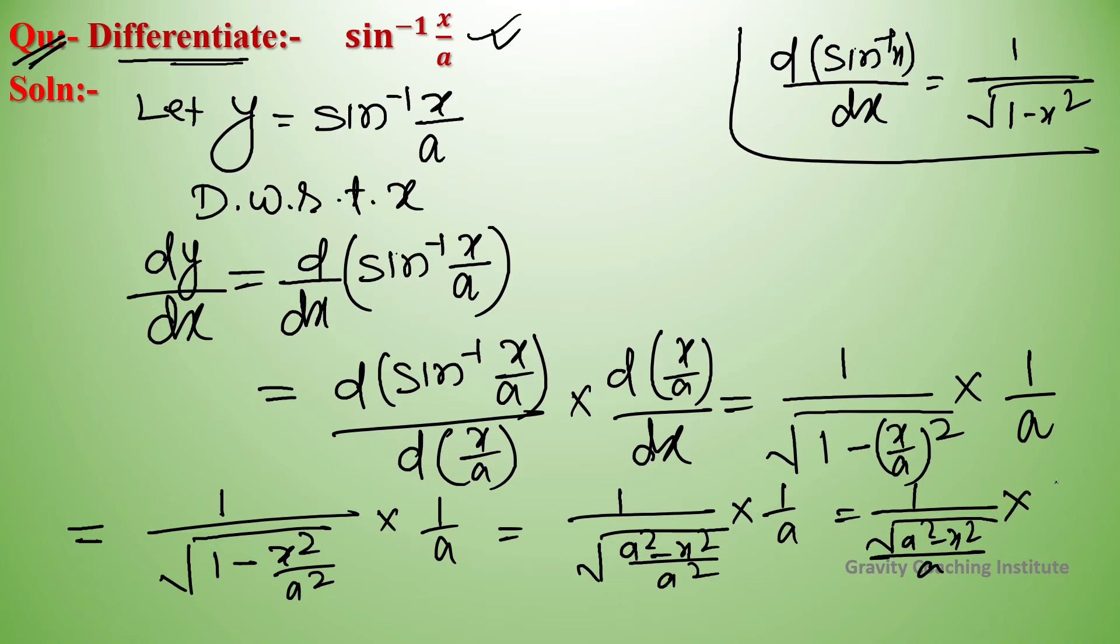Into 1 upon a. So equal to a upon under root a squared minus x squared, into 1 upon a. So here a and a cancel. So equal to 1 upon under root a squared minus x squared, which is the required answer.